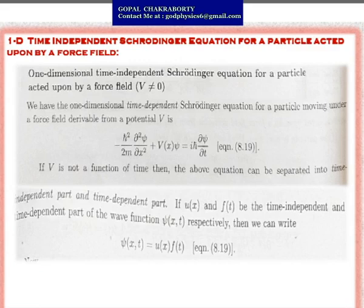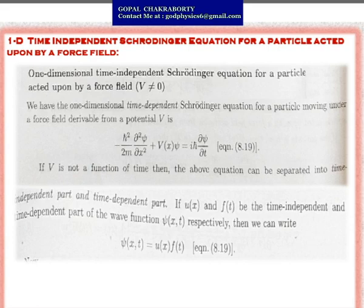The second case is the one-dimensional time-independent Schrödinger equation for a particle acted upon by a force field. In the previous problem, no force field was associated with the system, so potential energy V = 0. Here, the particle is acted upon by a force field, meaning V ≠ 0, and F = −grad V, so the potential energy exists. The one-dimensional time-dependent Schrödinger equation for a particle moving under a force field derivable from potential V is: −(ℏ²/2m)(∂²ψ/∂x²) + V(x)·ψ = iℏ(∂ψ/∂t).